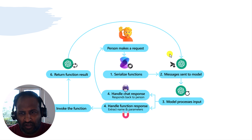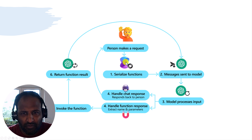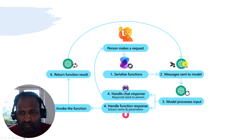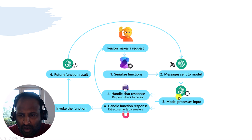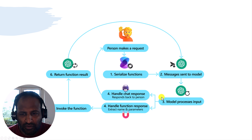Once the user sends a request to the kernel, the kernel's job is to check what available functions and arguments are, including the chat history information. It converts this to a serialized JSON format and sends it to the OpenAI model. The model processes the request and returns either a chat response, a function response, or both based on the user input.